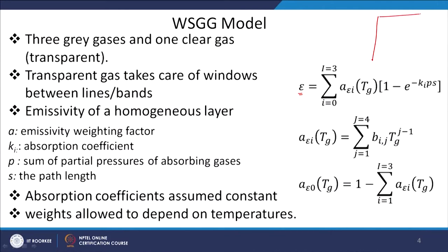Other than the transparent gas, we have 3 more gray gases — total 4 gases are represented. The emissivity of a homogeneous gas layer is written as a weighted sum of emissivity evaluated at the gray absorption coefficient. Here, κ_i (or K_i) is the pressure-based gray absorption coefficient, P is the sum of partial pressures of absorbing gases, S is the path length, and A_εi is the weight coefficient, which depends on gas temperature.